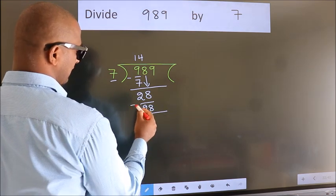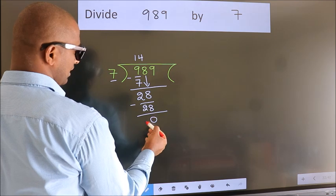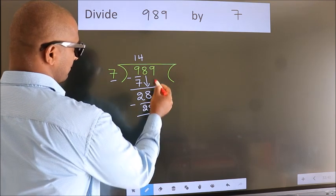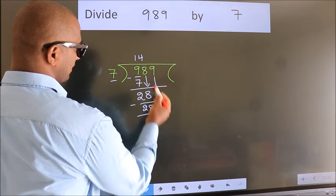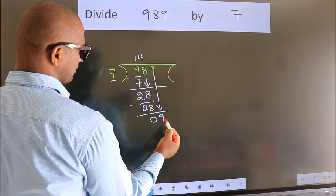Now, we subtract. We get 0. After this, bring down the beside number. So, 9 down. So, 9.